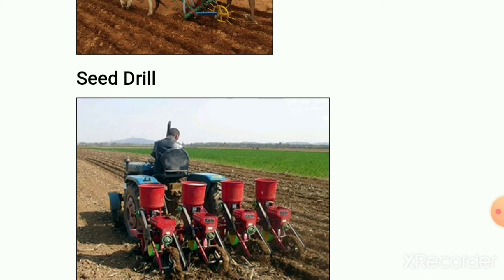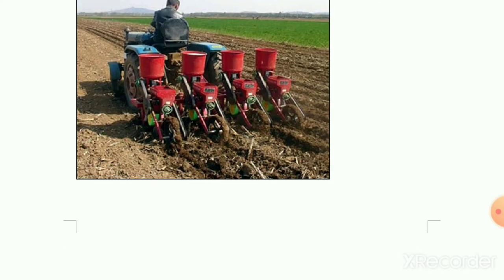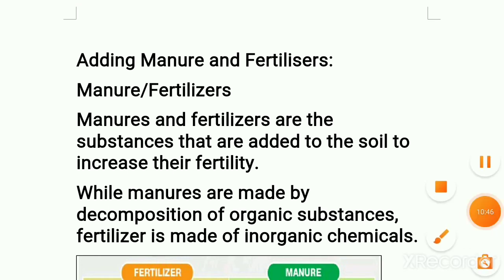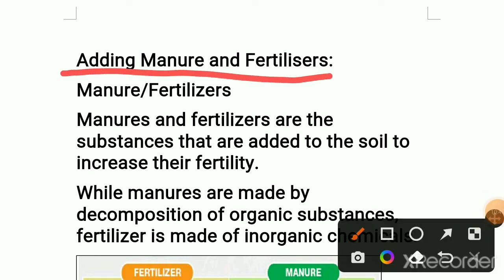The third step: adding manure and fertilizers. You have prepared the soil, then sowed the seeds — third, you have to give manure and fertilizers to the soil. Manure and fertilizers are both added to the soil to provide nutrients so that plants grow nicely. Manure is a natural process product containing lots of humus, while fertilizers are inorganic matter which do not contain any humus.